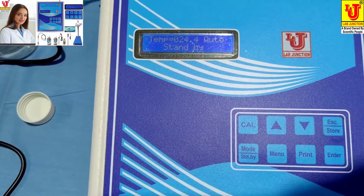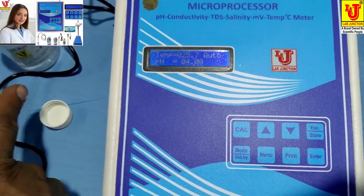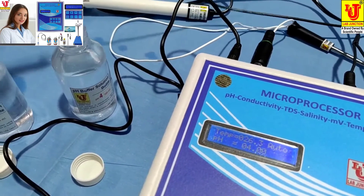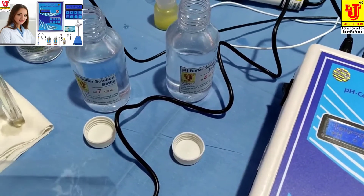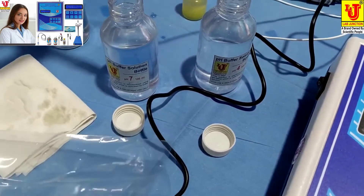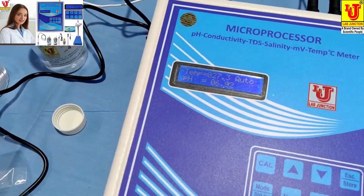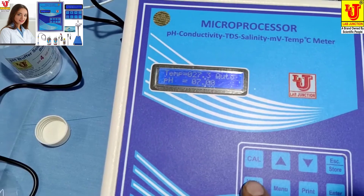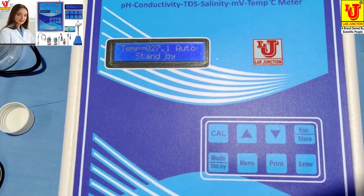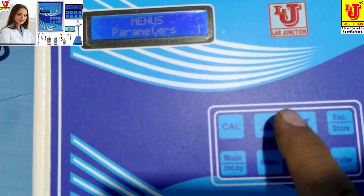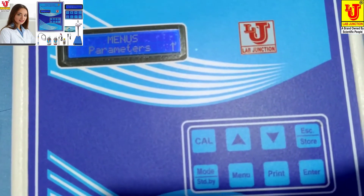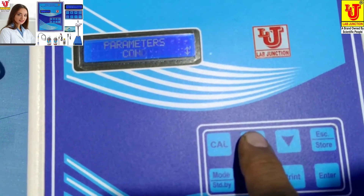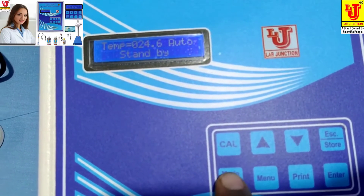pH is now calibrated. You can see the pH result. Currently this is in 4 pH buffer. Now changing to another sample — inserting in 7 pH buffer — it correctly shows 7. Now I am calibrating conductivity. Select conductivity from the menu key, press enter for parameters. This is pH, this is ORP, this is conductivity — press enter. Conductivity is now selected.